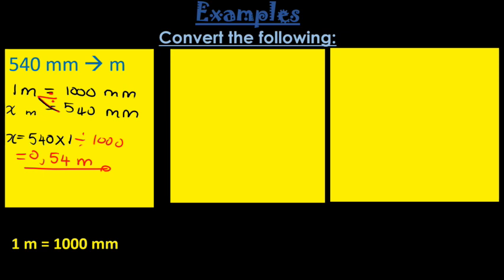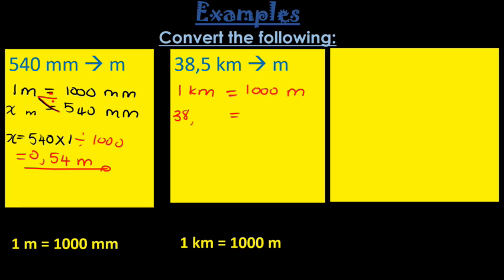Let's move on to the second question. 38.5 kilometers to meters and they do give you that one kilometer is in fact equal to 1,000 meters. The first thing you need to do, write what you have down which is one kilometer is equal to a thousand meters. Then I have 38.5 kilometers. I'm going to write it on the kilometer side. Very important to stay consistent. And then this side now you're going to have x meters.